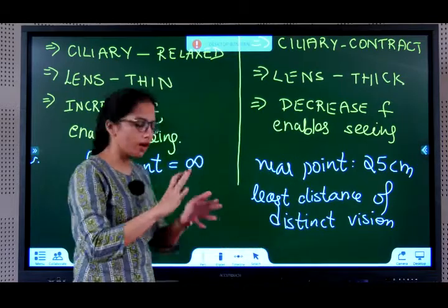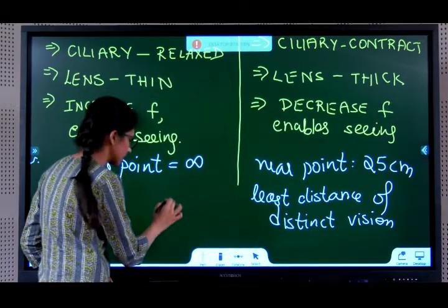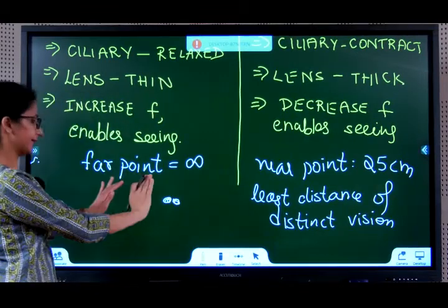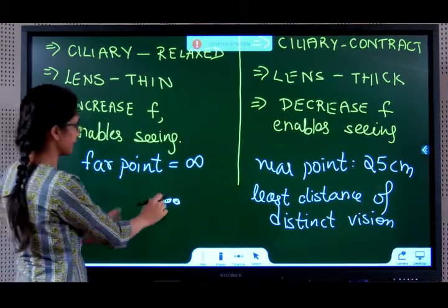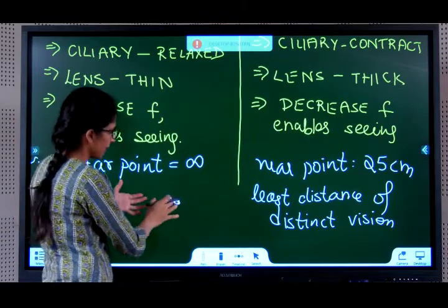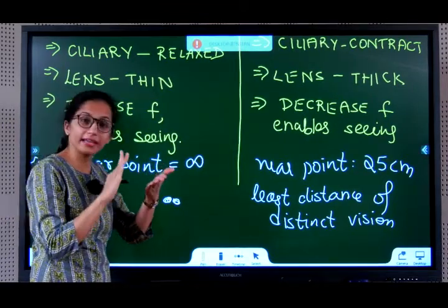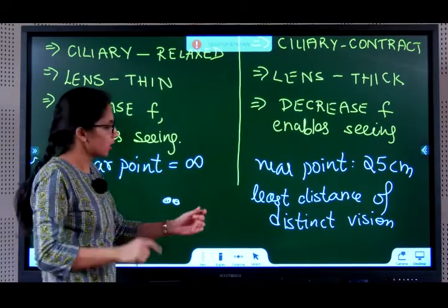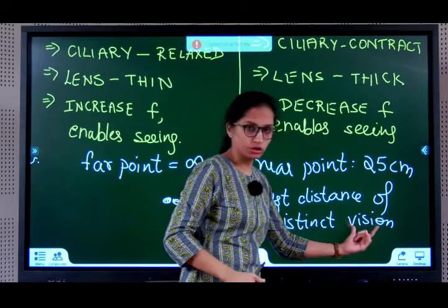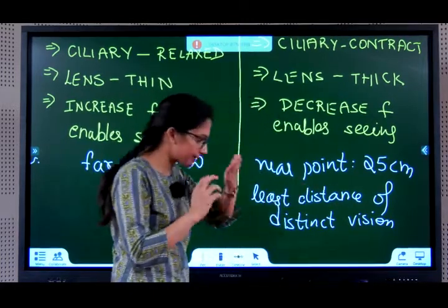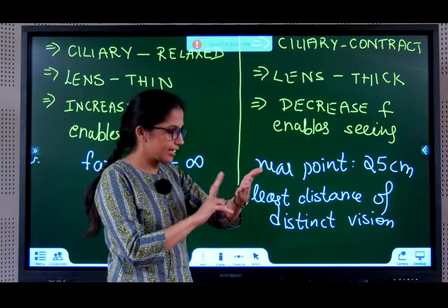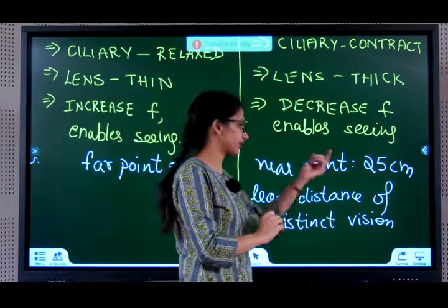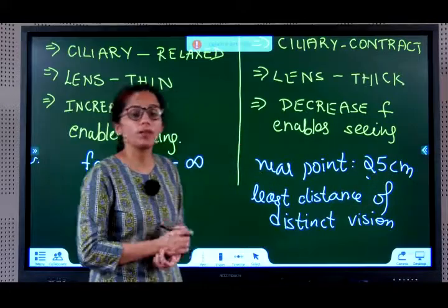Distinct vision means things are not blurring. If there are two things and I can see them clearly — distinctly — I can differentiate them. But if I keep them too close, they might start blurring and I cannot differentiate between them. Least distance of distinct vision is the least distance for which you can see two objects separately — and that is 25 centimeters for a normal eye.